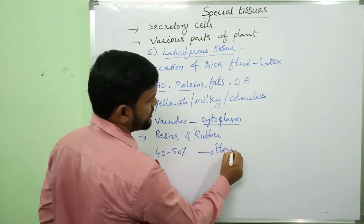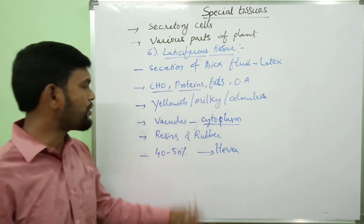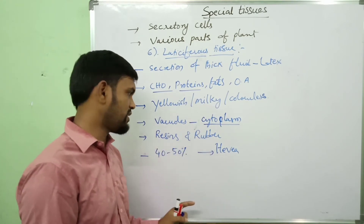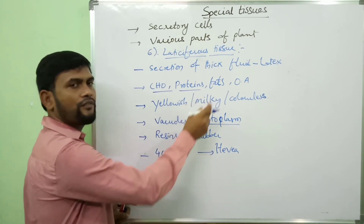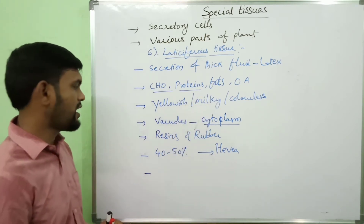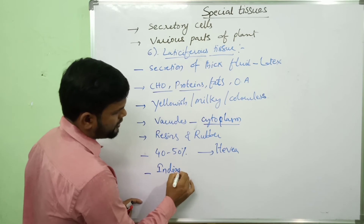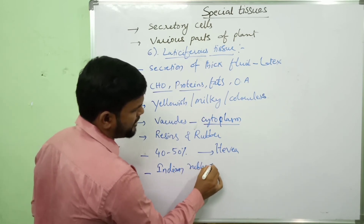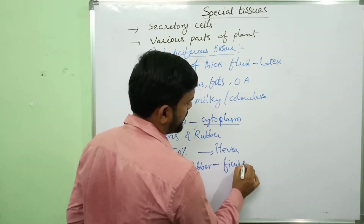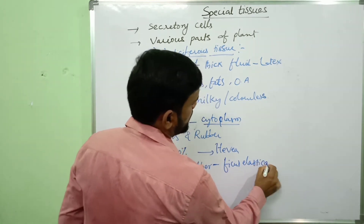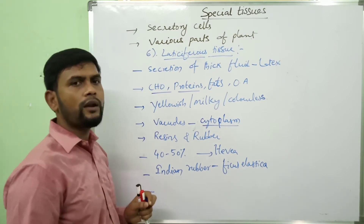In Hevea brasiliensis, 40 to 50% of rubber is present in the latex, from which para rubber is prepared. Indian rubber is manufactured from Ficus elastica.